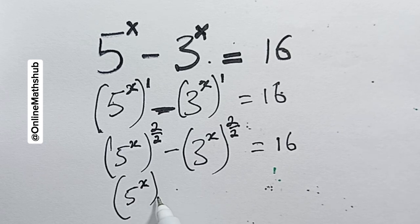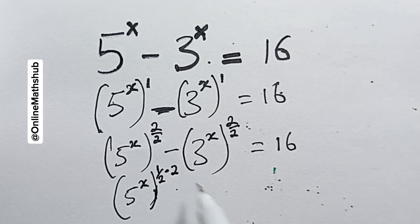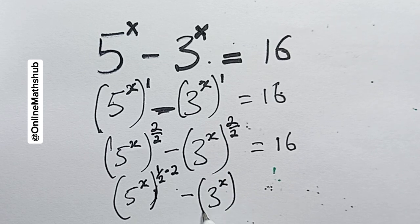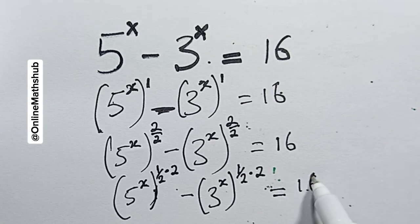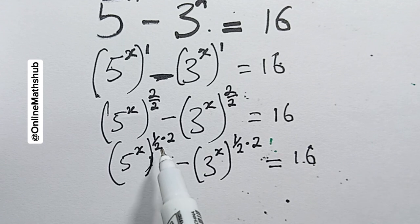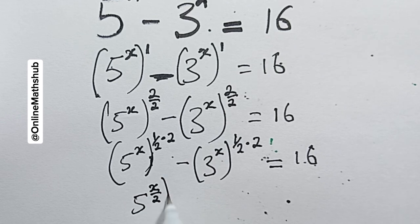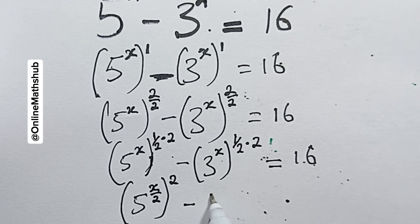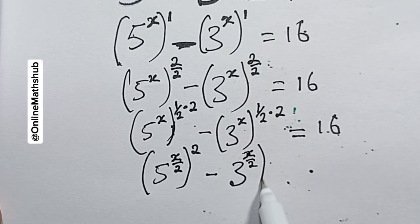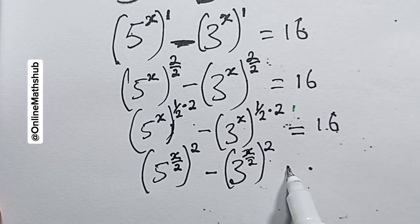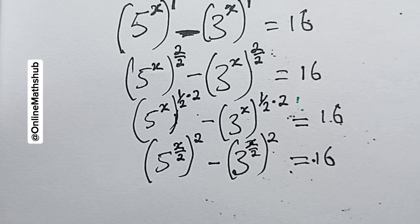So this is going to be 5x with the power written as (1/2) × 2, minus 3x raised to the power (1/2) × 2, equal to 16. I can push the 1/2 outside, giving 5 to the power (x/2), all raised to the power 2, equal to 16.